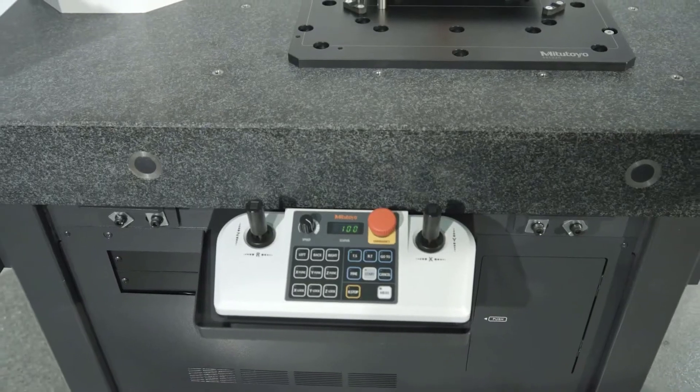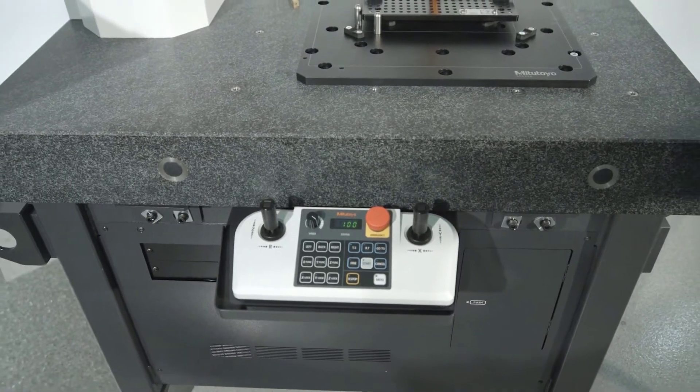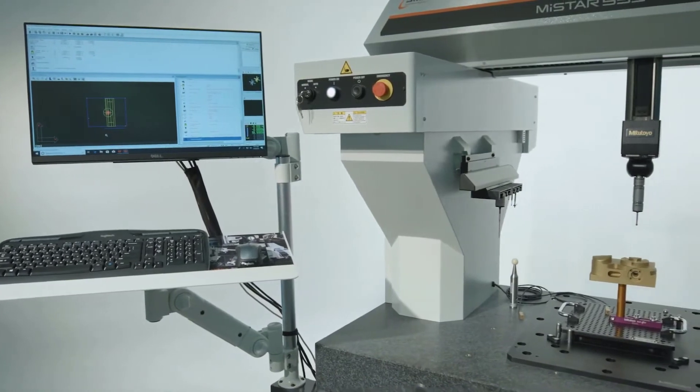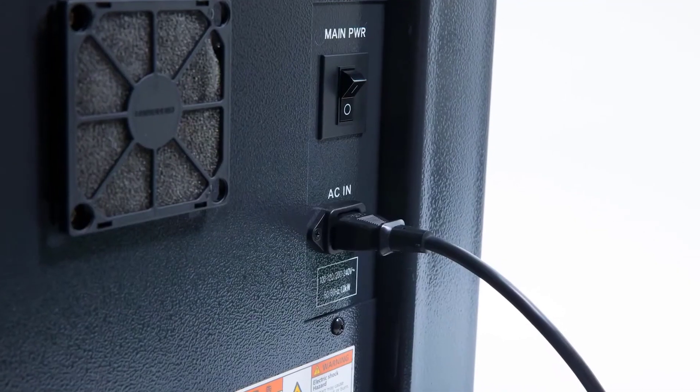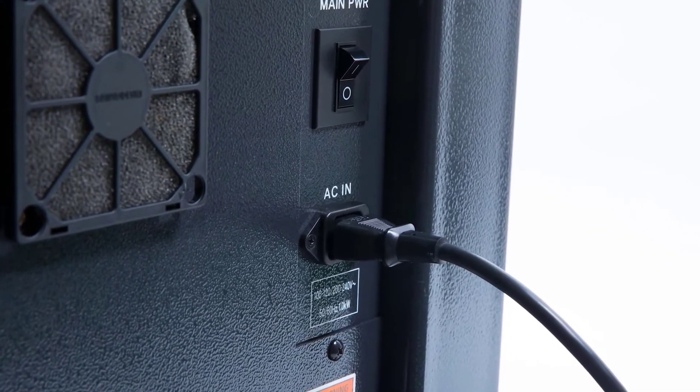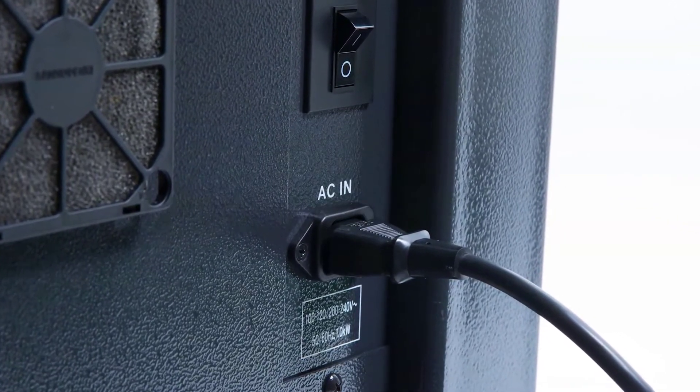The CMM's compact design requires minimal floor space, making the MyStar optimal for in-line or near-line measurements in the smallest of work areas. The MyStar runs on standard 120-volt electrical service and does not require compressed air.